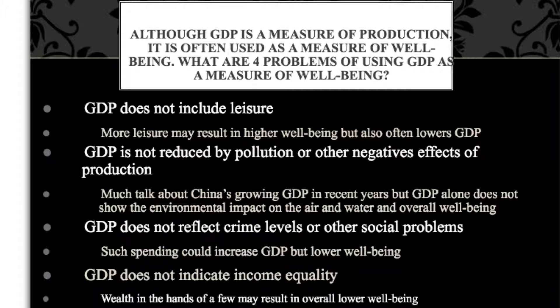The fourth one is that GDP does not indicate income equality. It is theoretically possible that a country could have a fairly high GDP level, but when you actually break down who holds the income, maybe the top 10% have a significant portion of the income and the rest are living at subsistence level. You might look at two countries with similar GDPs, but one has a fairly equal income distribution and one has a very unequal one. This is just an acknowledgement that if you only look at GDP, you're not getting the whole picture.